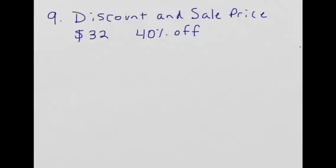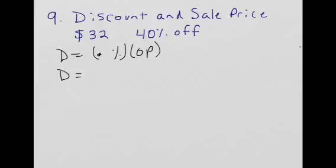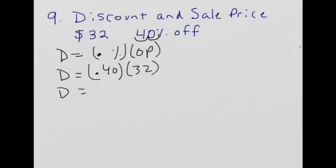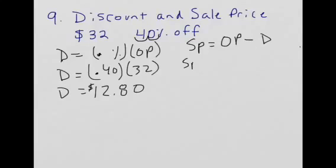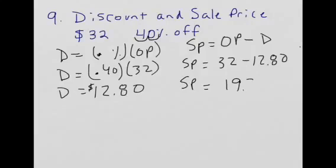Discount: discount equals percent (as a decimal) times original price. The discount here is 0.40 times $32, so our discount is $12.80. To find the sale price, take the original price minus the discount: $32 minus $12.80, giving a sale price of $19.20.